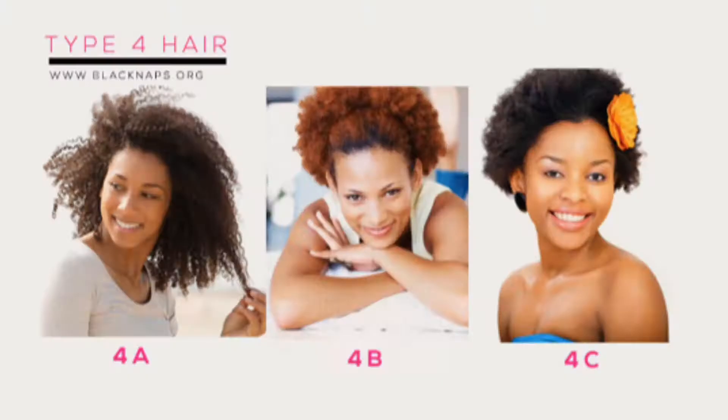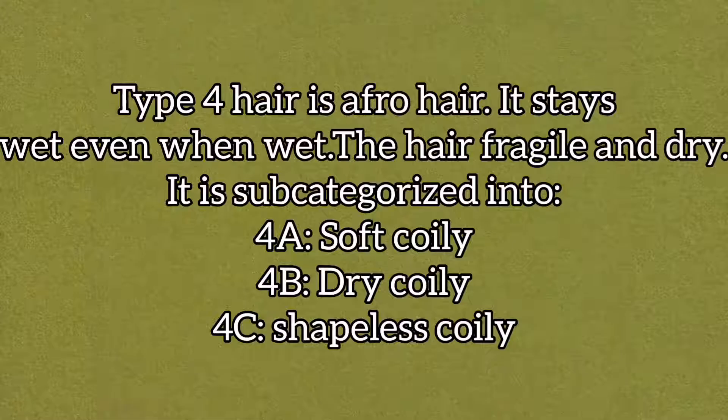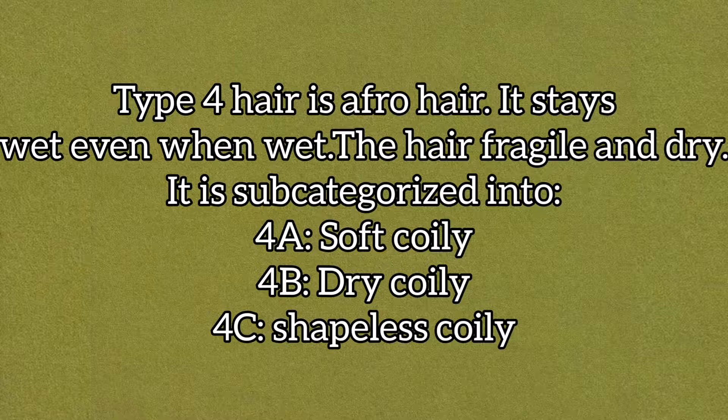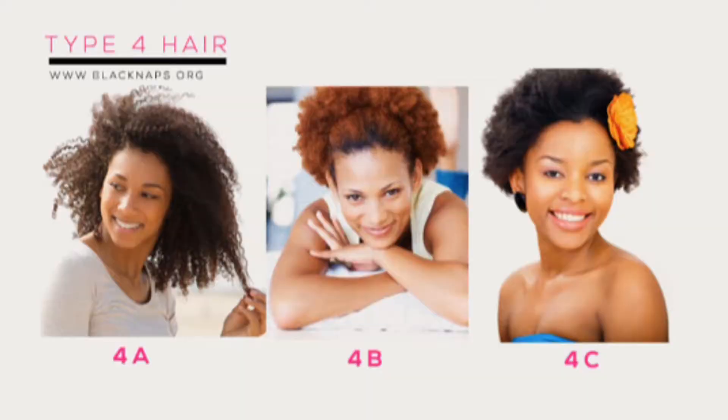Type 4 hair is known as coily, kinky, or afro hair. It differs from Type 3 hair because it stays coiled even when wet. This hair type is fragile and dry, as oil cannot travel easily through the hair strands. This is my hair type and it is common among Black women.